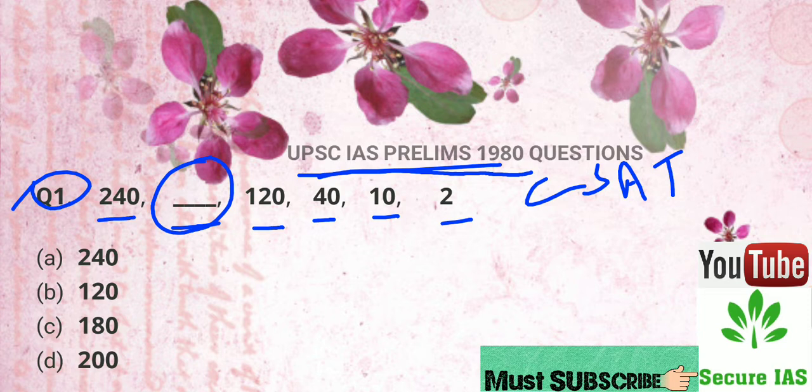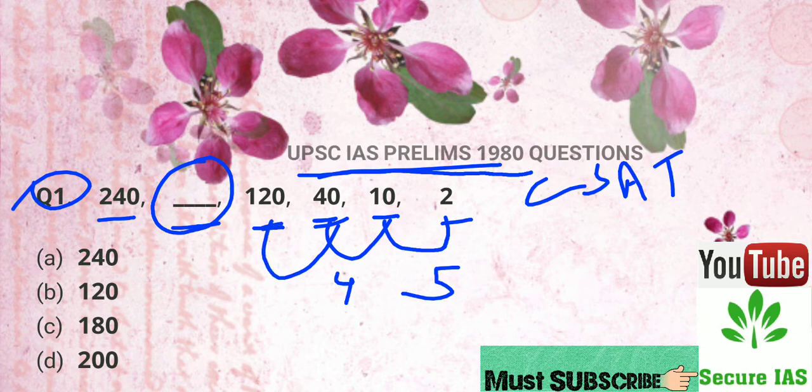As you can see, if we multiply 2 and 5, then we will get 10. If we multiply 10 by 4, then we will get 40 as a result. If we multiply 40 by 3, then we will get 120.